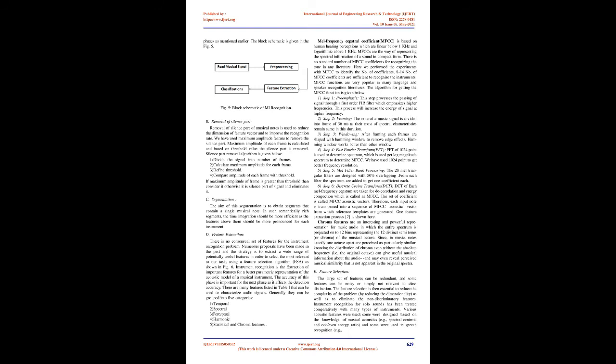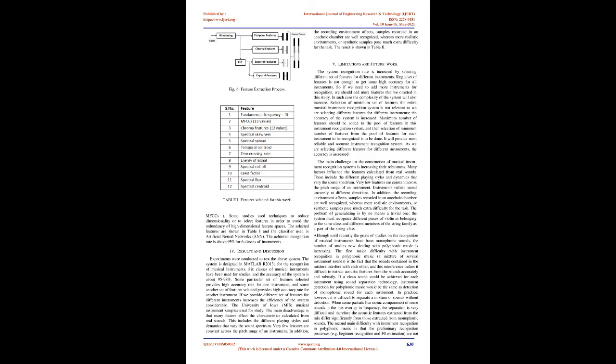Step 5, Mel filter bank processing — 20 Mel triangular filters are designed with 50% overlapping; from each filter the spectrum values are added to get one coefficient. Step 6, Discrete Cosine Transform (DCT) — DCT of each Mel frequency spectrum is taken for decorrelation and energy compaction, producing the MFCCs. The set of coefficients is called MFCC acoustic vectors, and each input note is transformed into a sequence of MFCC acoustic vectors from which reference templates are generated. Chroma features are a powerful representation where the entire spectrum is projected onto 12 bins representing the 12 distinct semitones of the musical octave, providing useful musical information even without absolute frequency.